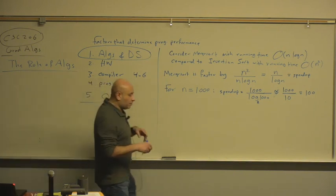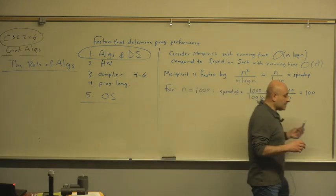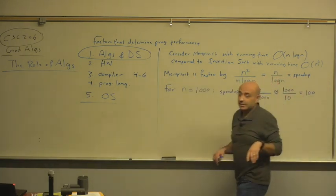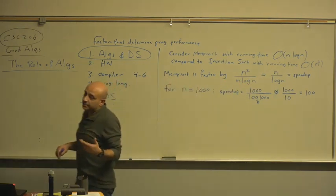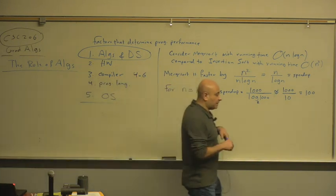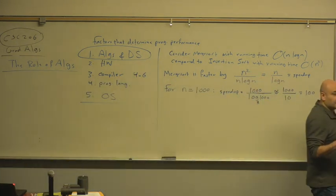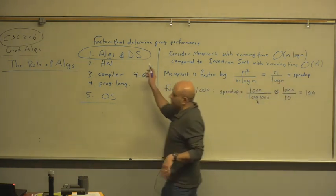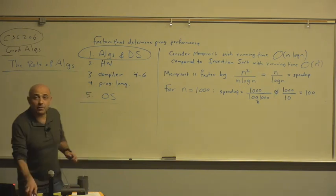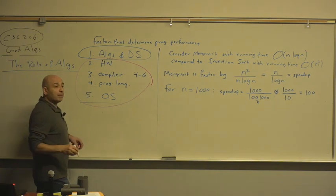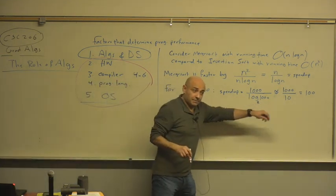Programming language, again, if you program it in C or program it in Java, it's not going to be 100 times faster. C is not going to be 100 times faster than Java. The operating system, again, we can't expect 100 times speedup by running on a different operating system. All of these factors that determine program performance are secondary factors compared to the algorithm itself.